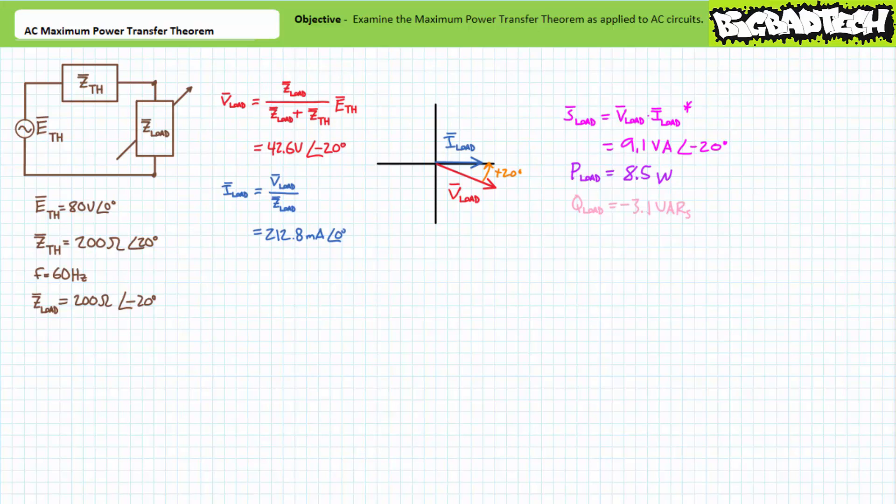If our load was set to any other magnitude or any other angle, it would dissipate less real power. Before examining electrical properties at other than maximum power conditions, it's perhaps worth a moment to more thoroughly examine the maximum power condition itself.